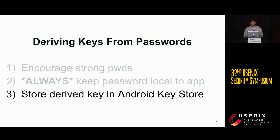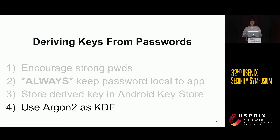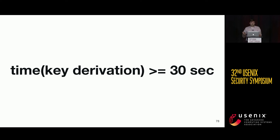Ideally, key storage would leverage secure hardware where possible. Finally, we want to use a key derivation function that's both CPU-hard and memory-hard. In the paper we recommend using Argon2, since it can be dynamically configured to take as long as possible. We actually proposed 30 seconds as a floor for how long the user would wait. While this sounds like a long time, prior work suggests people will tolerate a longer delay if given an explanation for how it protects their security. We need future work to explore this in more detail.